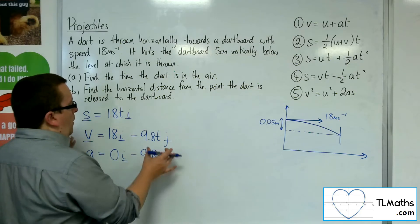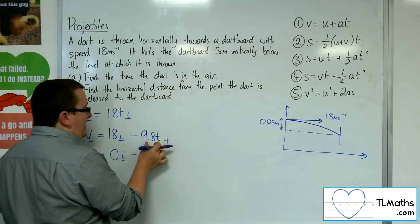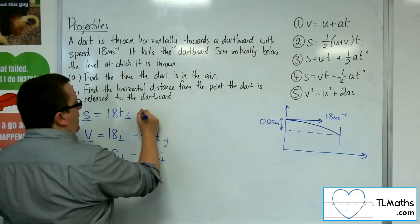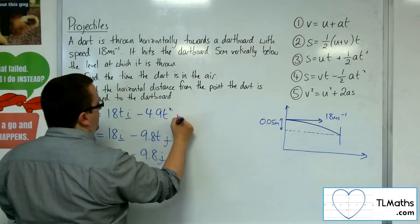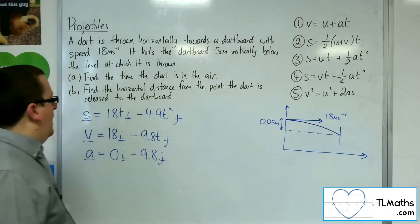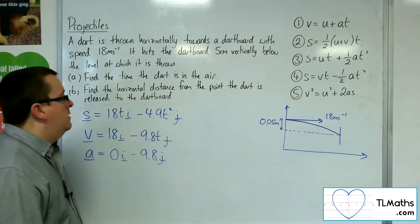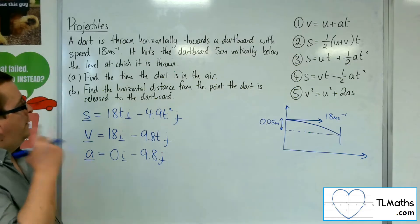So what we're going to do is we're going to integrate this guy, and we're going to get minus 4.9 t squared j, and they are my equations. Quite basic and straightforward for this one.